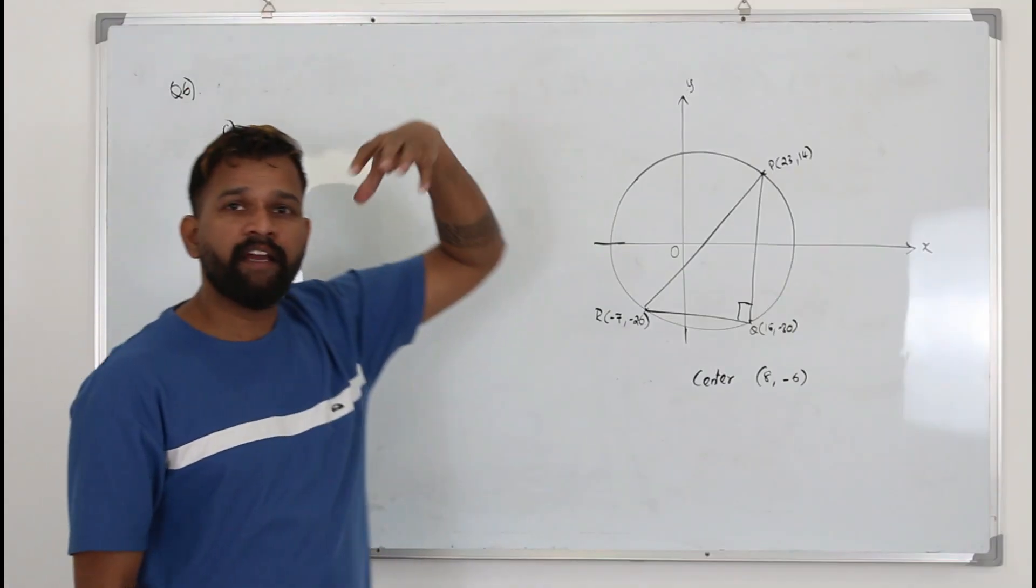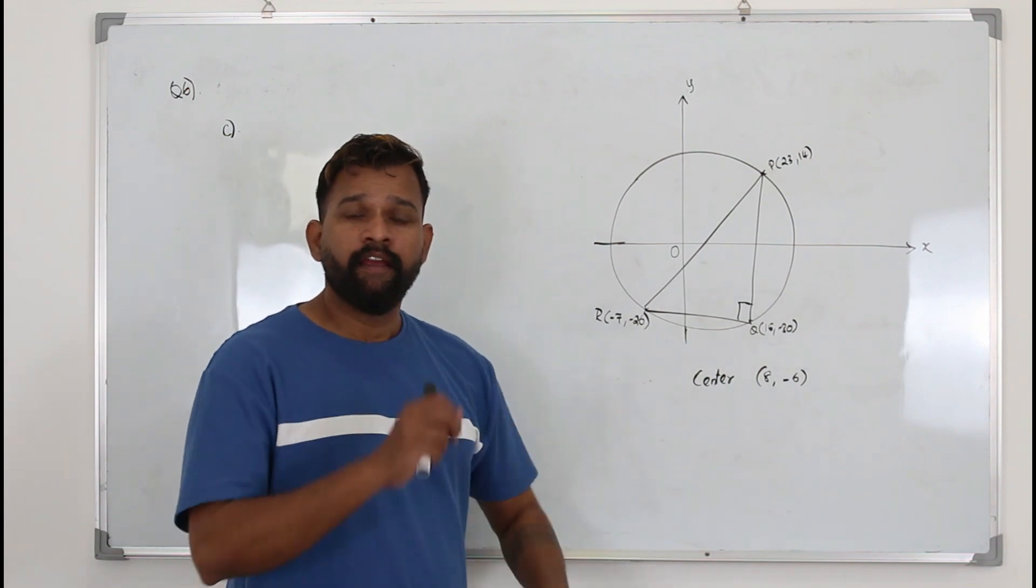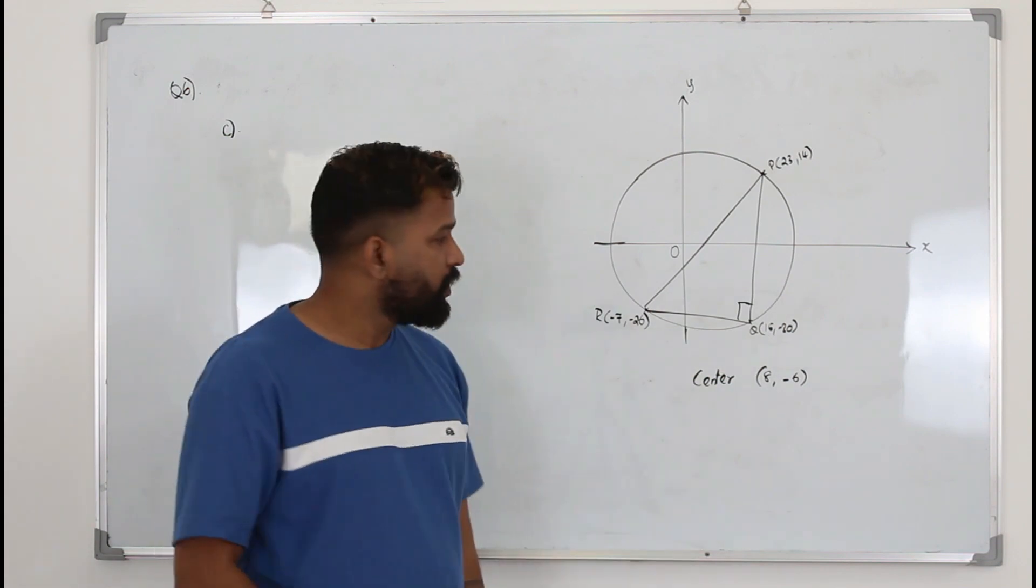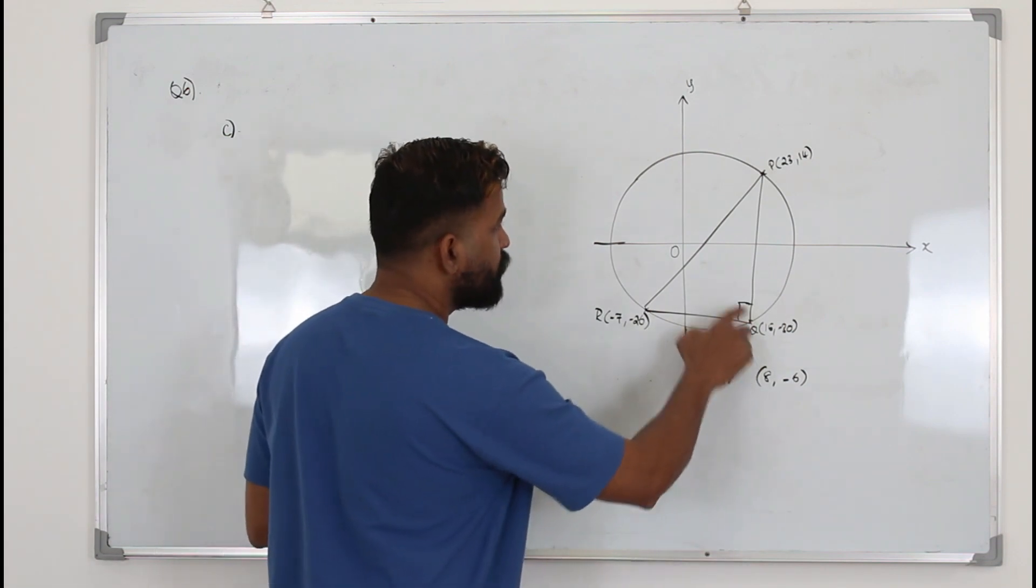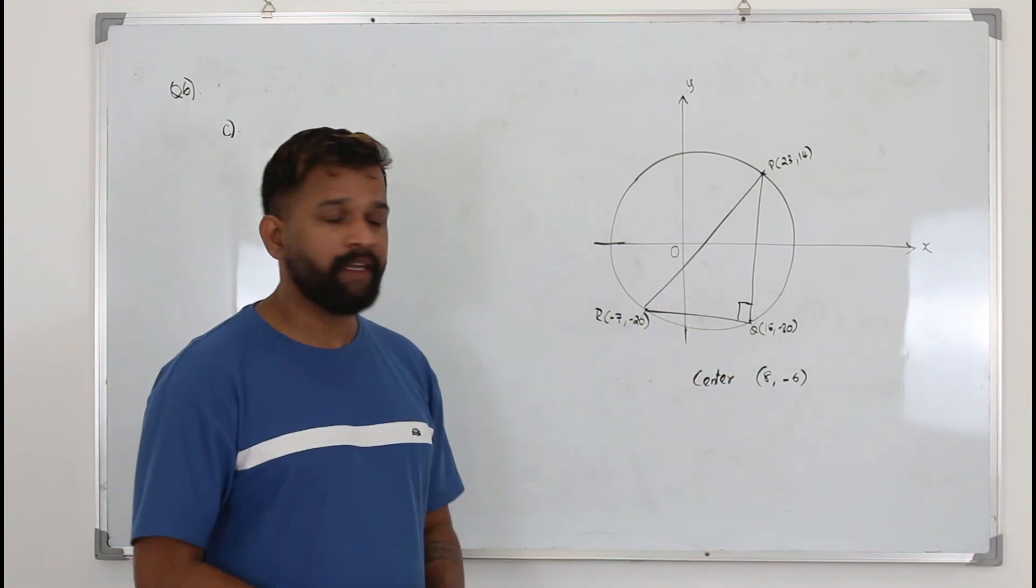Now here they are talking about a new point S somewhere here, but the information given is the distance between Q and S is the greatest. What do they mean by it?